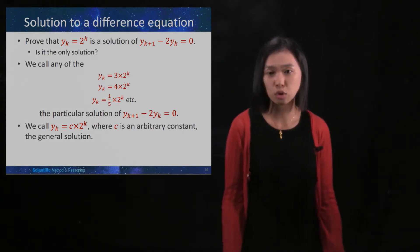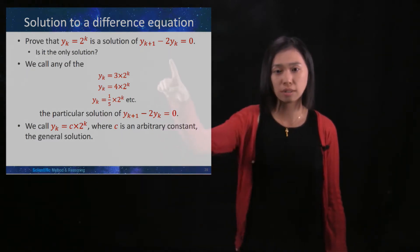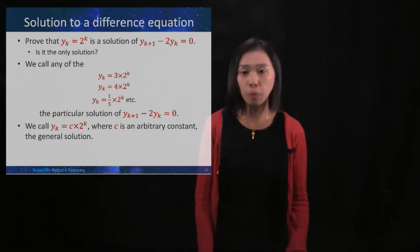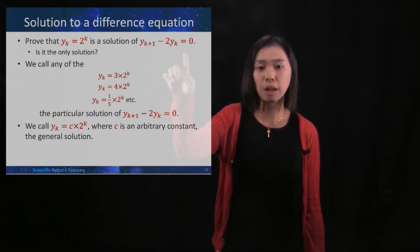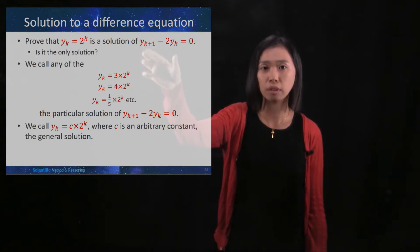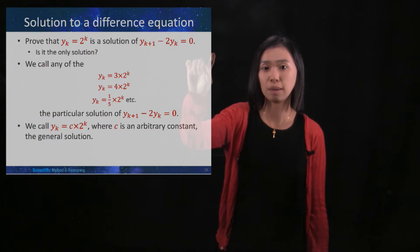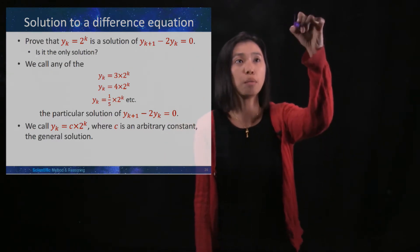So we want to prove that yk equals 2 to the power of k is a solution to this difference equation. The way we're going to prove it is that we start with the left side of this difference equation, substitute the solution, and check whether it is the same as the other side. So we start with the left hand side.